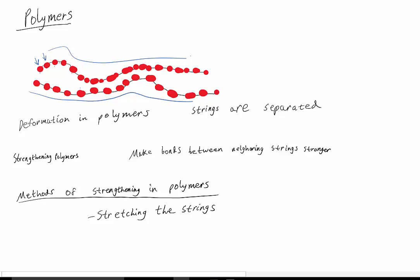The adjacent strings are bonded together by van der Waals bonding, which is a weak form of secondary bonding. That's what holds the neighboring strings together. Deformation of polymers occurs when these strings are separated under tension, like this. The van der Waals bonds would be broken, and the strings are separated, and that's plastic deformation.